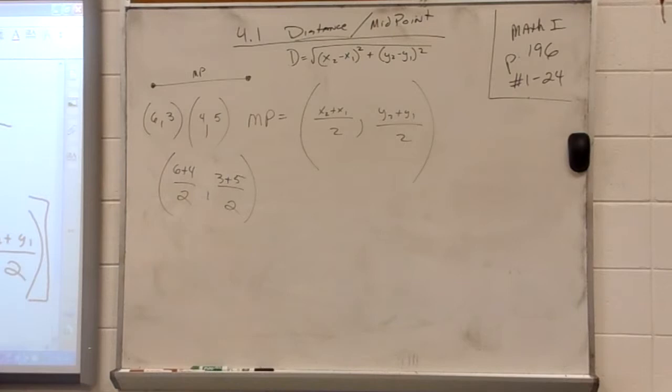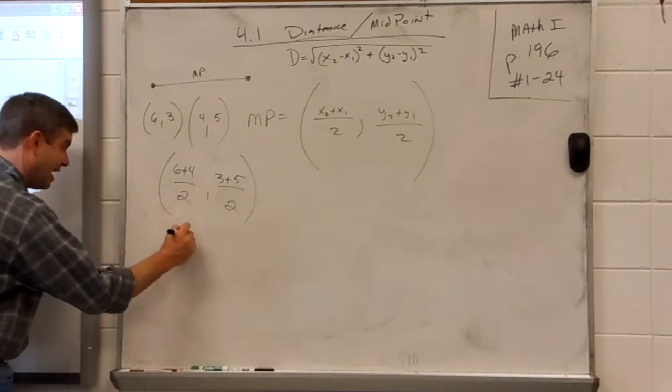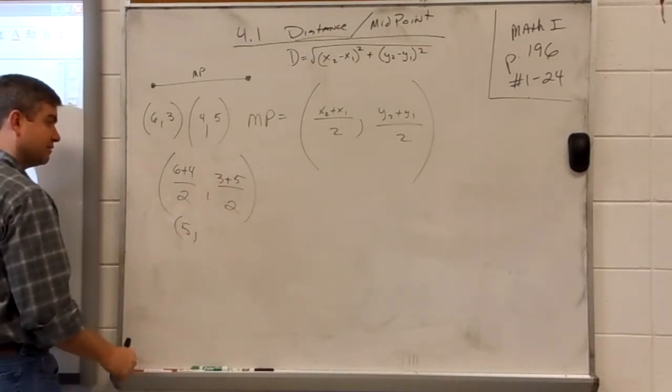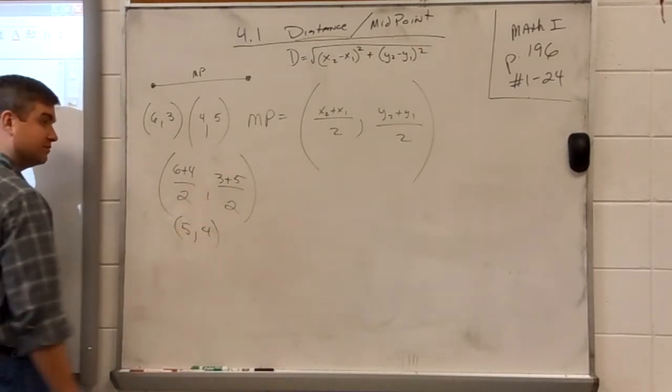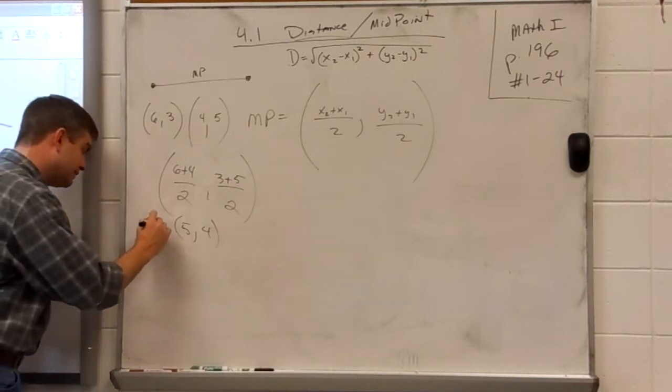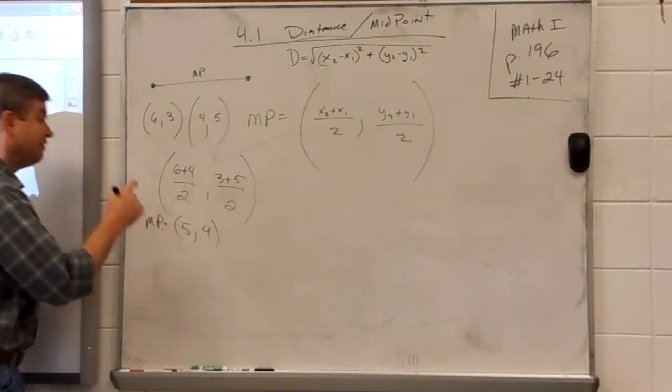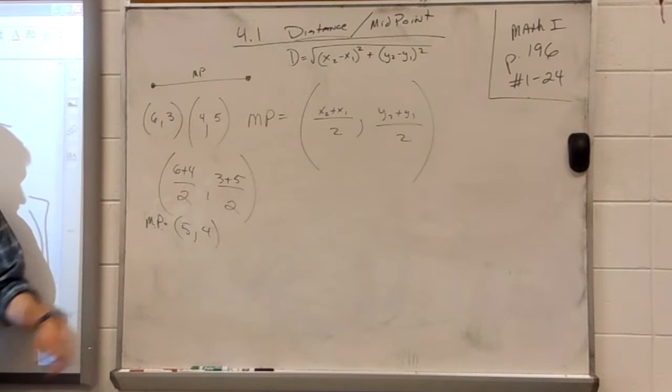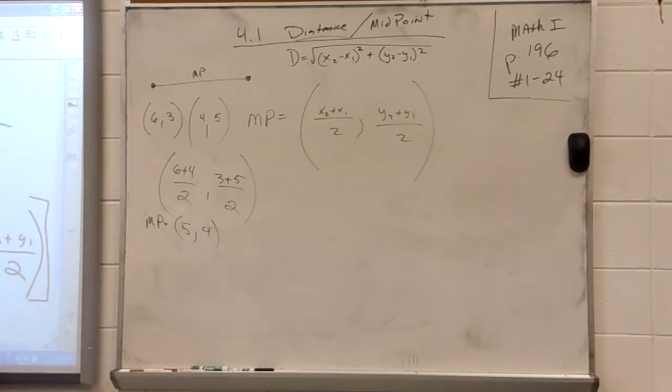Add up your x's, divide by 2. Add up your y's, divide by 2. What does this give us? What's 6 plus 4 divided by 2? 5. What does this give us? 4. So our midpoint from these two points is simply 5, 4. Is that hard? No. They could throw negatives in there. They could make it odd, so you might get a fraction, right? Like 9 over 2 or something like that. But finding midpoint is not difficult.